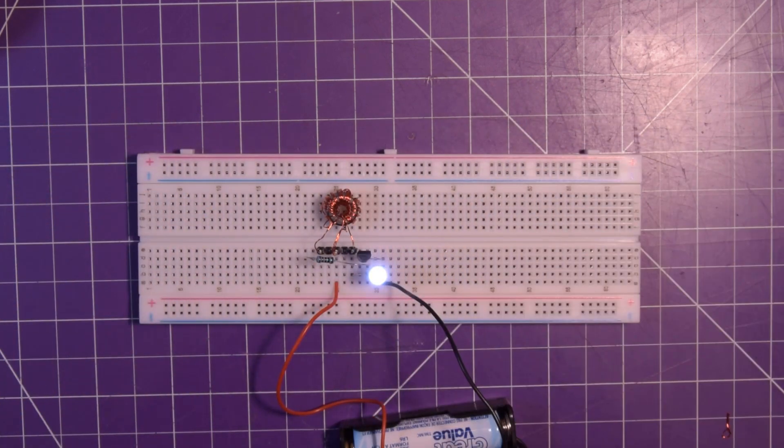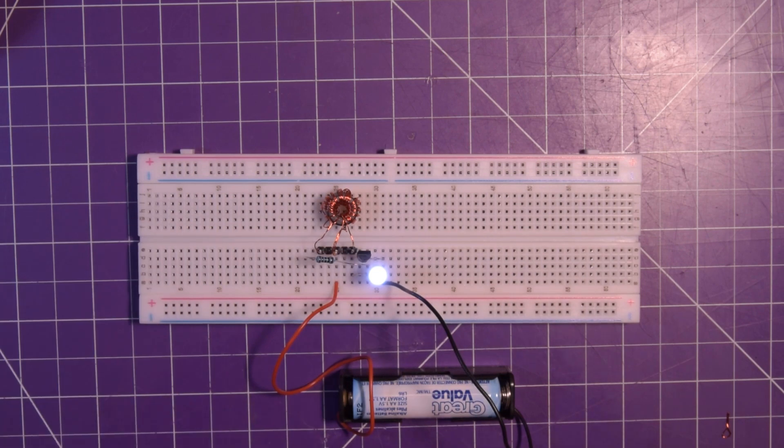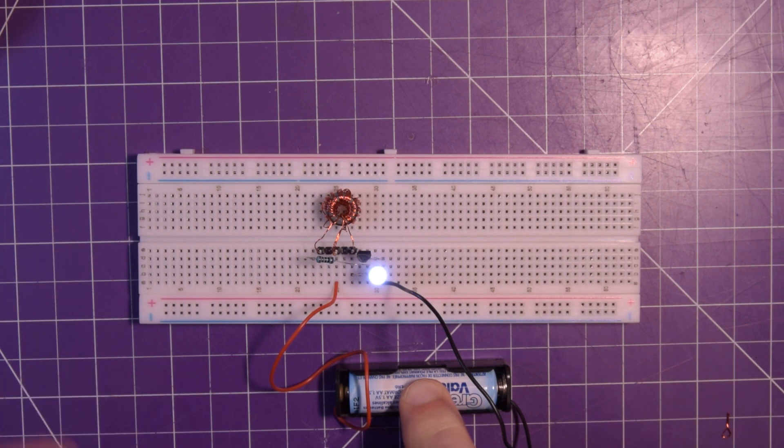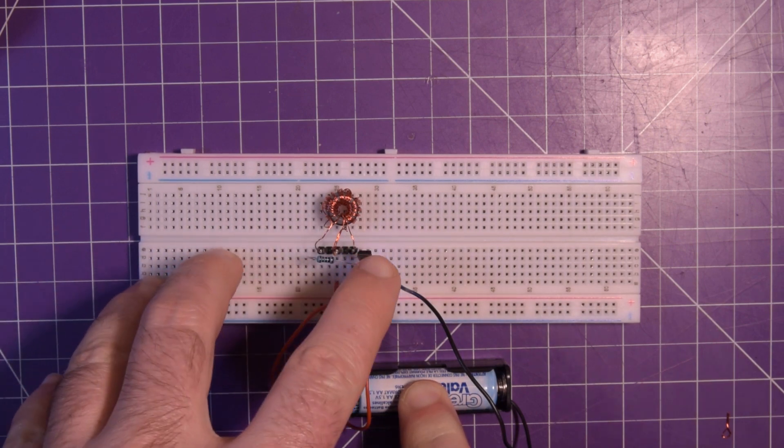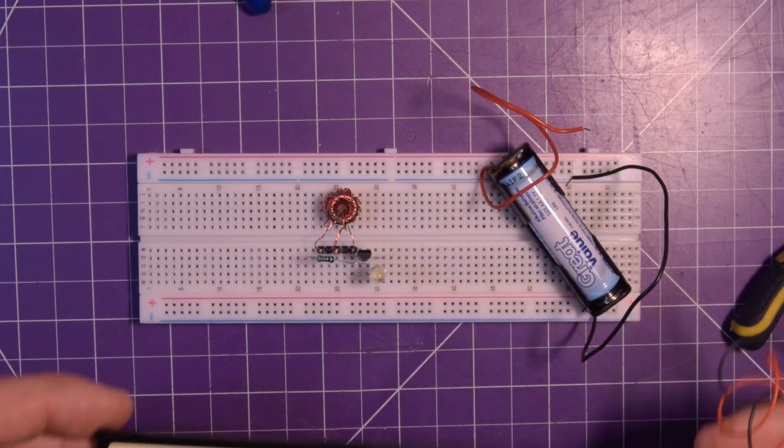On it goes and so that means that this transformer, even though it's the ugly duckling, it's transforming up the voltage from 1.2-ish volts up to the 2.8-ish volts that this LED has as a requirement to be lit. But it doesn't end there, so don't forget I was telling you this circuit is amazing.